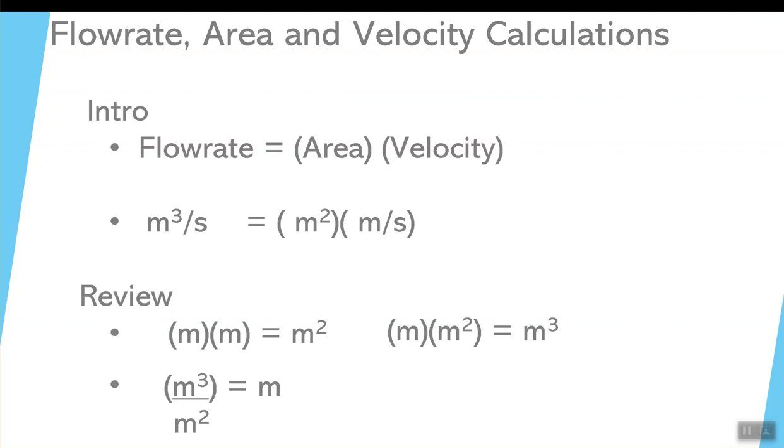When you divide meters cubed by meters squared, you subtract the exponents. Meters cubed divided by meters squared, subtract three minus two, gives you one, or just the unit itself. When you take meters cubed divided by meters, it gives you meters squared. That's a fundamental thing you have to know for this particular section.